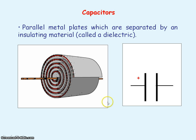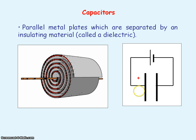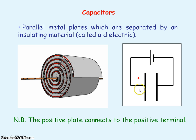The electrical symbol for a capacitor is two parallel lines. If we connect the capacitor to a battery, it's important to note that the positive plate of the capacitor must be connected to the positive plate of your battery. When the capacitor is connected like this, we say the capacitor is charging — it's gaining charge.